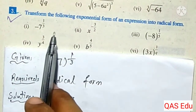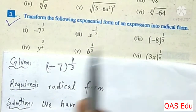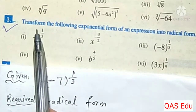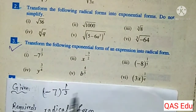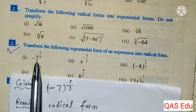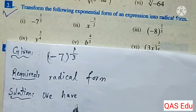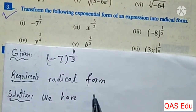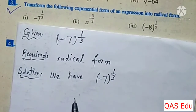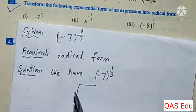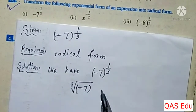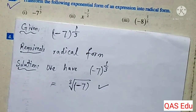Question 3: transform the following exponential form expressions into radical form. The power form is transformed into radical root form. For minus 7 to the power 1 over 3, the required radical form is the cubic root of minus 7. The index is 3, and the radicand is minus 7.